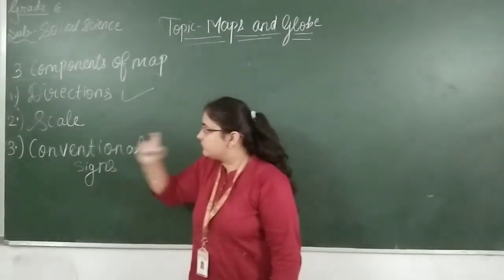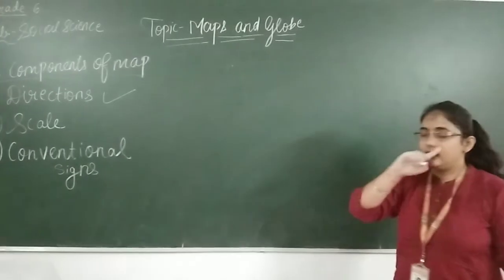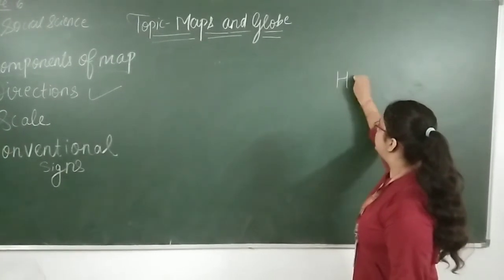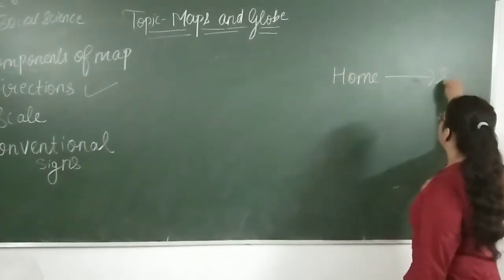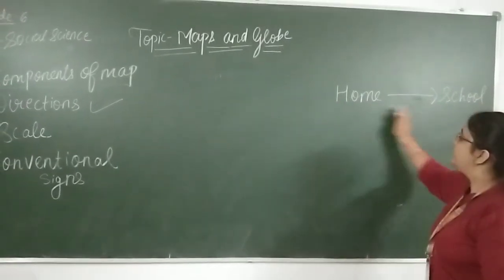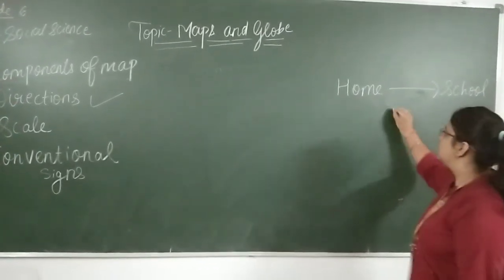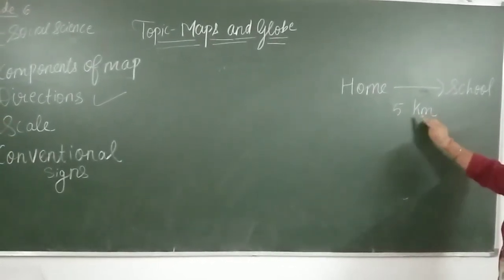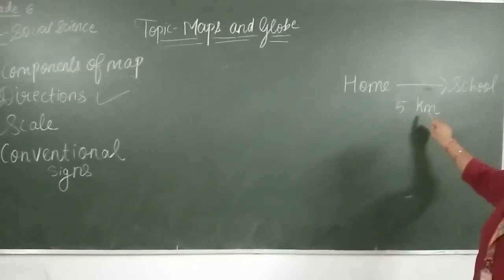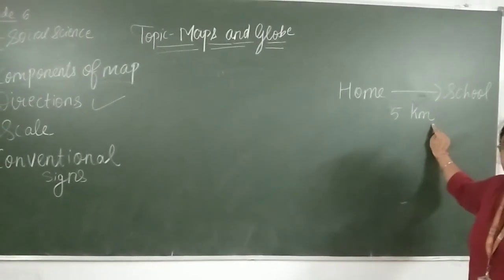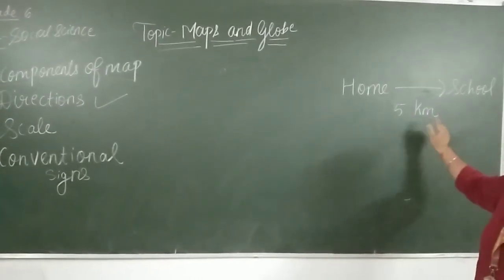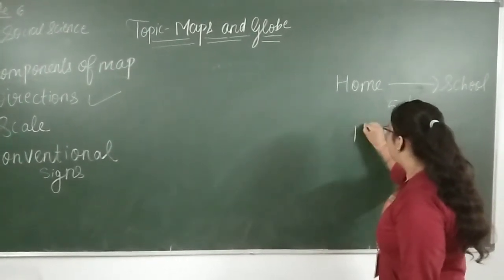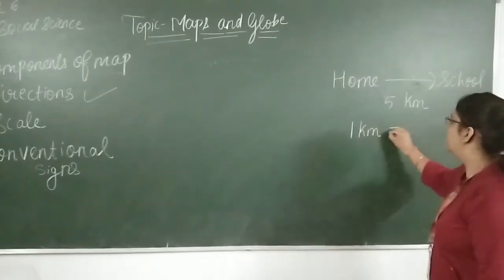Now we will learn about scale. What is scale? If you are looking at a map, you can use the scale. For example, if the distance between your home and school is 5 km — since 5 km is a larger unit, we cannot draw it directly on the map. So in the map, we consider 1 km equal to 1 cm, because cm is a smaller unit.